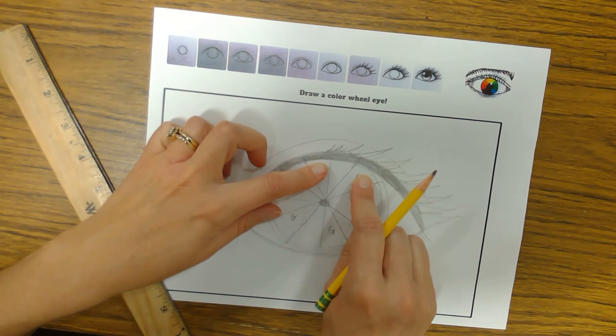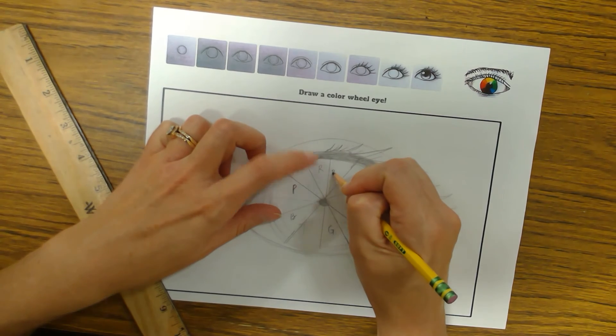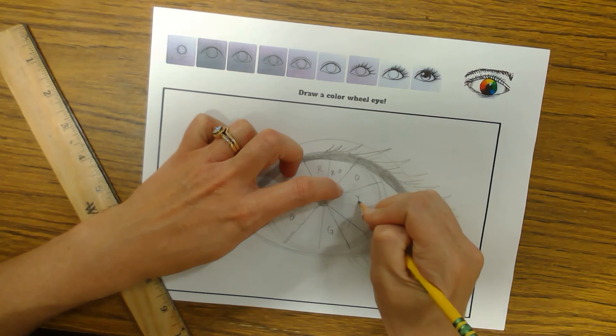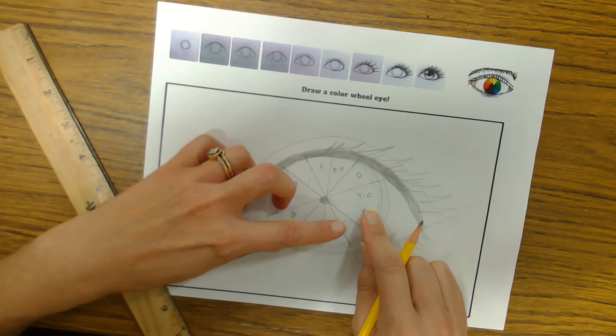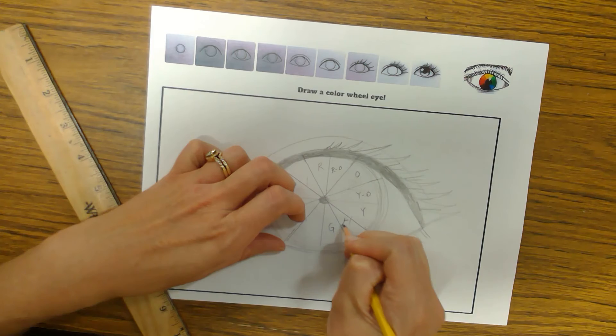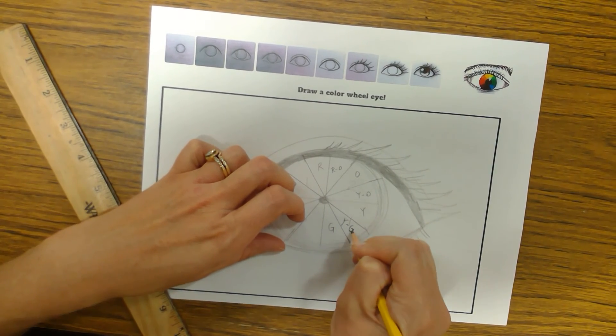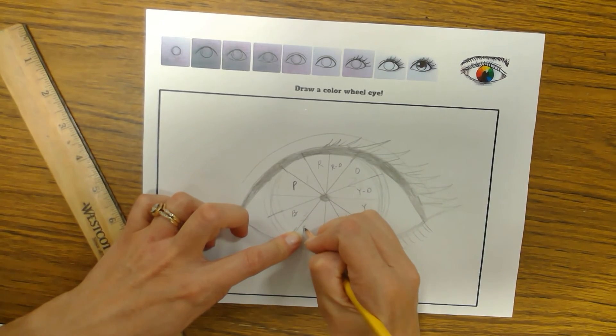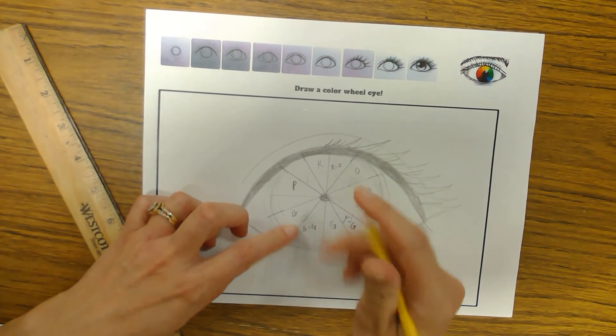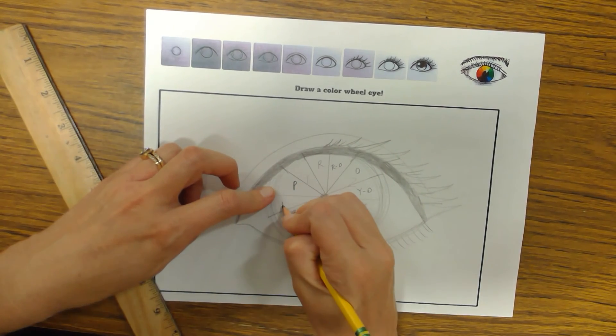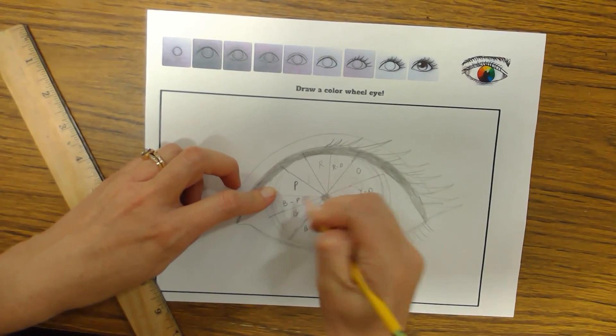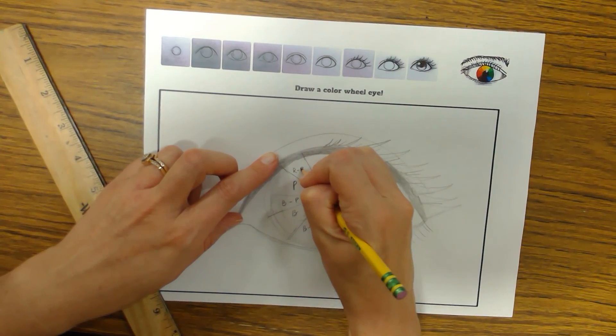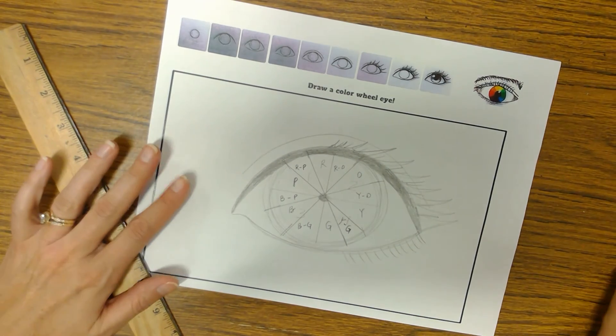Now, red plus O, orange, equals red orange in the center. Y plus O equals yellow orange. Y plus G equals yellow green. Notice the primary color is always the first color. G plus blue equals blue green. B plus P equals blue purple. And P plus R equals R P for red purple. And that's it.